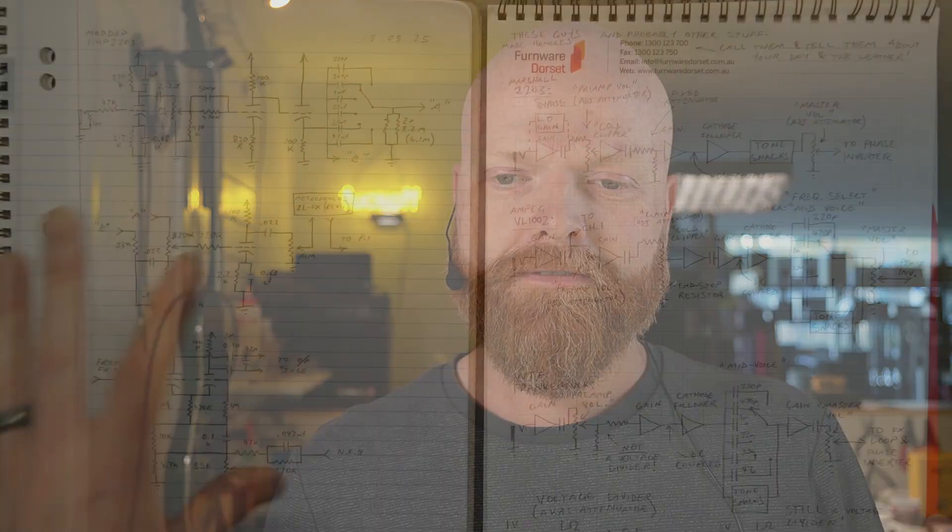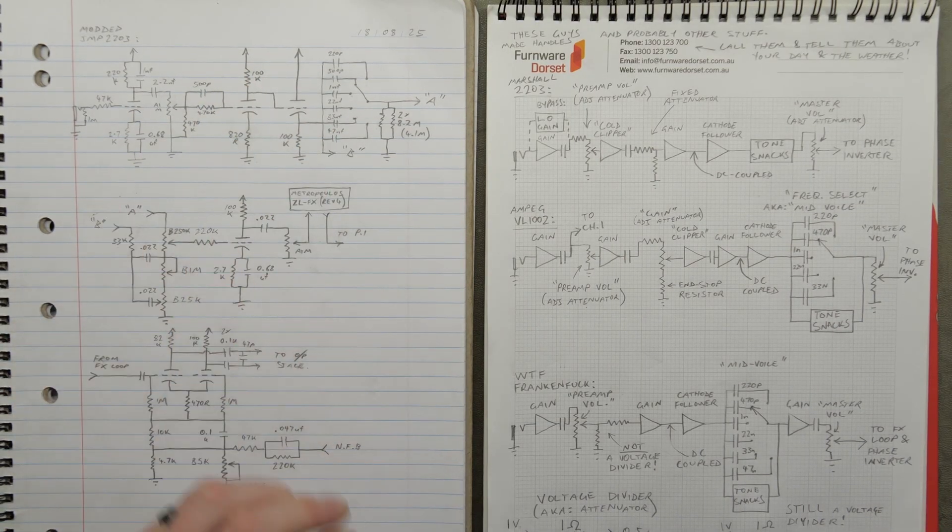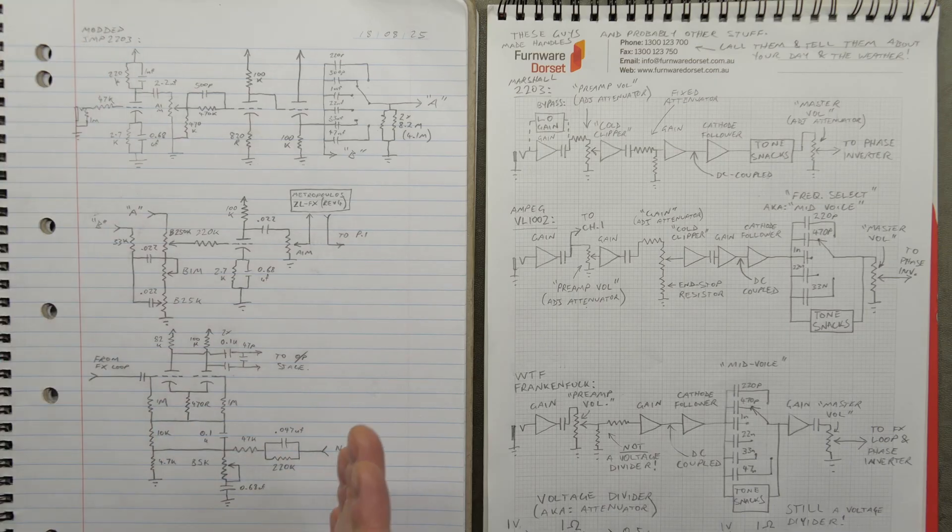Fool's errand, perhaps. All right, so here's the schematic of what was in the amp as it came in. Simplified a bit, but we go from the input down to the phase inverter.